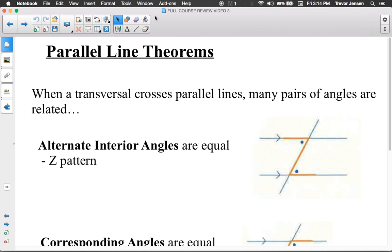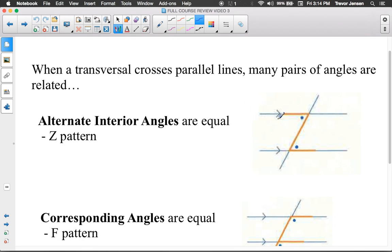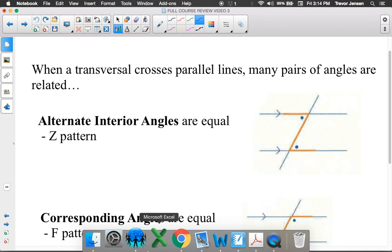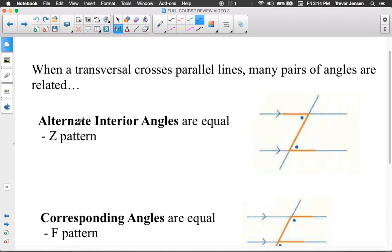You probably would have started by reviewing parallel line theorems. You probably would already know these from grade 8. Basically, if you have two parallel lines, you can tell they're parallel because of these little arrows here. We have two parallel lines that are cut by a transversal. There are some theorems we can use to find unknown angles. First theorem is the alternate interior angles theorem, and that tells us if we have this z pattern, the angles inside the z are equal to each other.